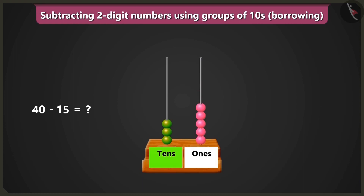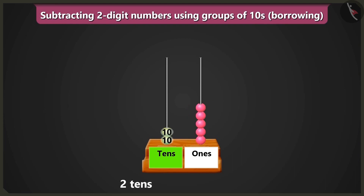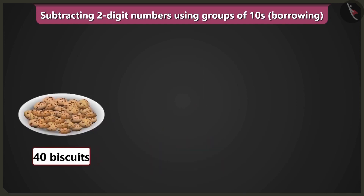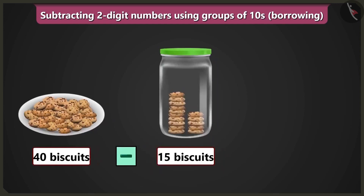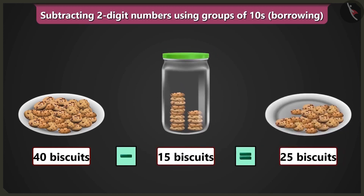Now we subtract in the box of tens. Removing 1 bead from 3 beads leaves 2 beads — which means 2 tens. So now 2 beads remain in the box of tens and 5 beads remain in the box of ones — 2 tens plus 5 ones equals 25. If we fill the jar with 15 biscuits, 25 biscuits would remain in this plate.